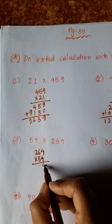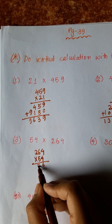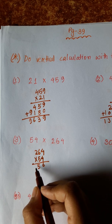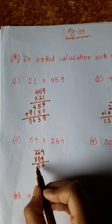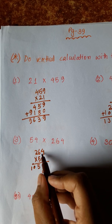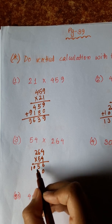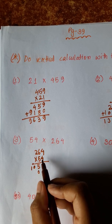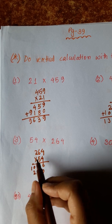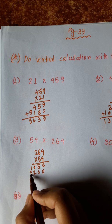4 into 4 is 16, carry 1. 4 fours are 24 plus 1 is 25, carry 2. 2 twos are 8 plus 2 is 10. 5, 5 fours are 20, carry 2. 5 sixes are 32 plus 2. 5 sixes are 30 plus 2 is 32, carry 3. 5 tens, 5 twos are 10 plus 3 is 13.